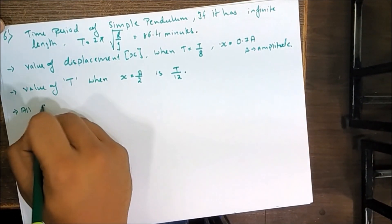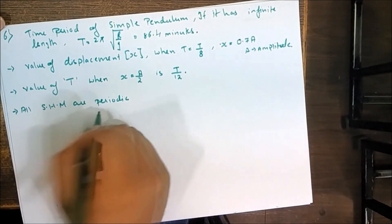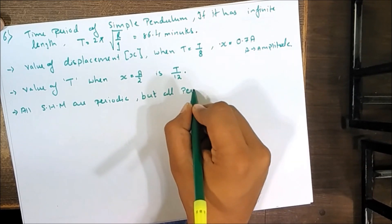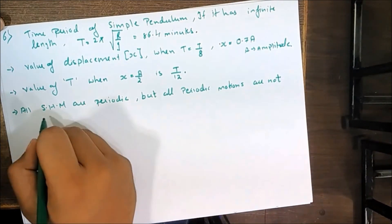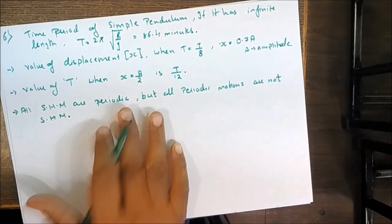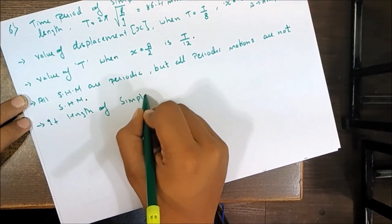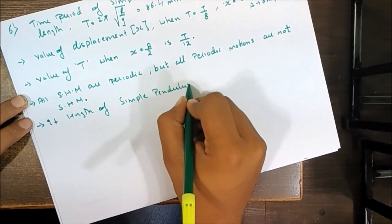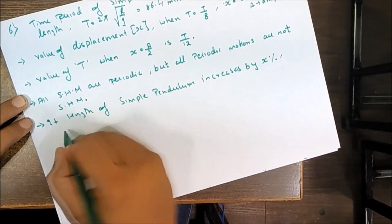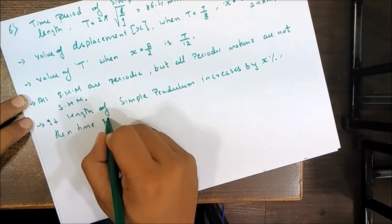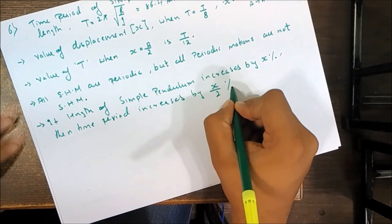Very important theory point: all simple harmonic motions are periodic. If the length of a simple pendulum increases by x percent, the time period increases by x/2 percent.